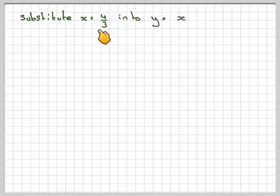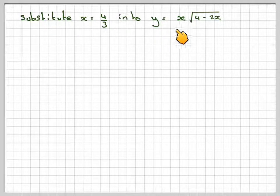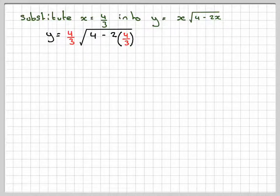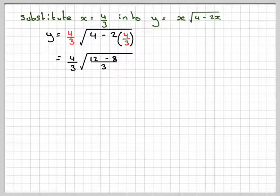Substitute into x is 4 over 3 into the value of y. y is equal to x root 4 minus 2x. So we've got y is 4 over 3 times the square root of 4 minus 2 times 4 over 3. So that's 4 over 3, 12 minus 8 over 3.